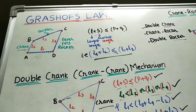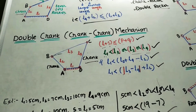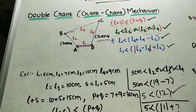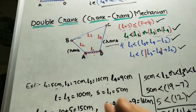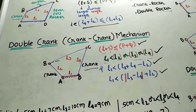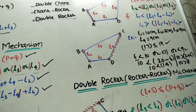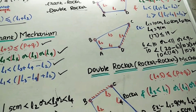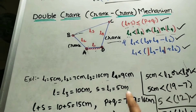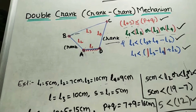In today's class we will discuss Grashof's law as well as some conditions. According to these conditions, we can tell by using the given lengths of the links whether the given mechanism is a double crank mechanism, crank rocker mechanism, or double rocker mechanism. We can also find which link is the fixed one among the given lengths.